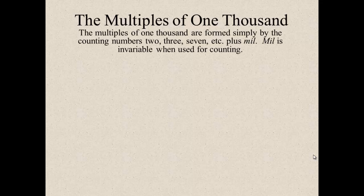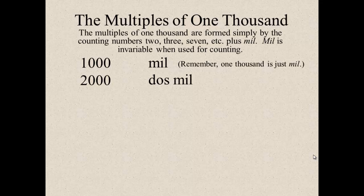The multiples of one thousand. The multiples of one thousand are formed simply by counting numbers two, three, seven, etc. and add in mil. Mil is invariable when used for counting. So, one thousand is mil. Remember, we don't say un mil. We just say mil. Two thousand is dos mil. Can you guess what three thousand is? Tres mil. Seven thousand, siete mil.